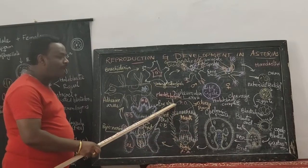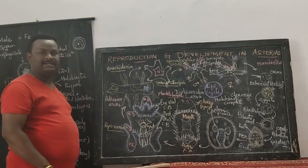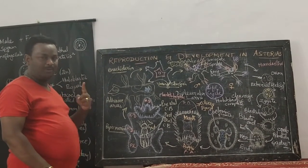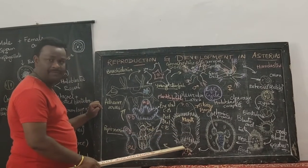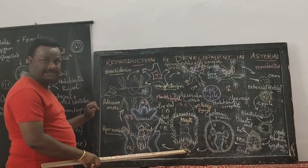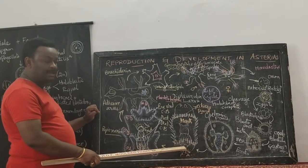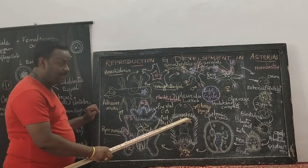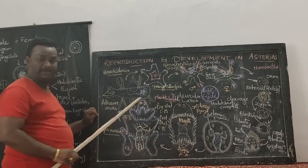There are no arms connected to the body structure. Instead, it has two major parts for the body. Number one, it has a complete digestive canal. The digestive system starts from the mouth and ends at the anus.